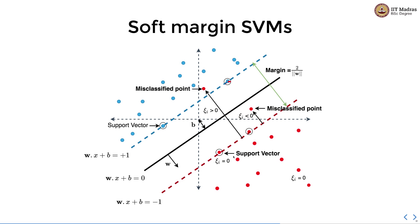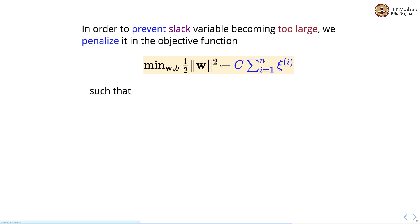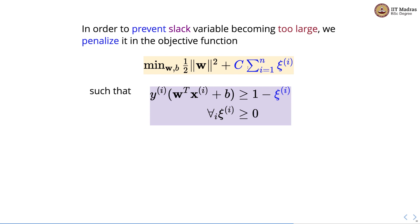For correctly classified points xi is equal to 0, and for incorrectly classified points xi is not 0. In order to prevent the slack variable from becoming too large, we penalize it in the objective function by adding C times the sum over all n training examples of xi_i to the original SVM objective. The constraints are: yi times (w transpose xi + b) >= 1 - xi_i, and each xi_i >= 0.